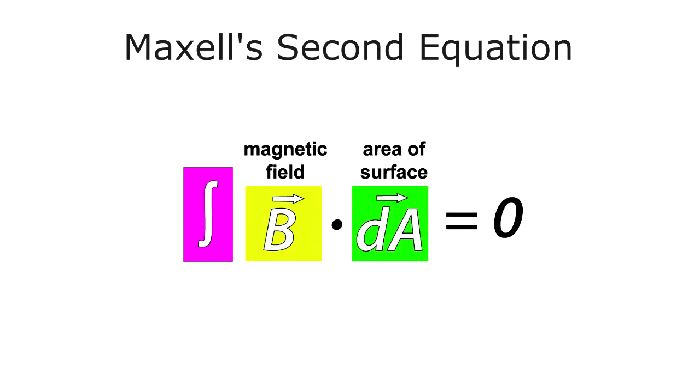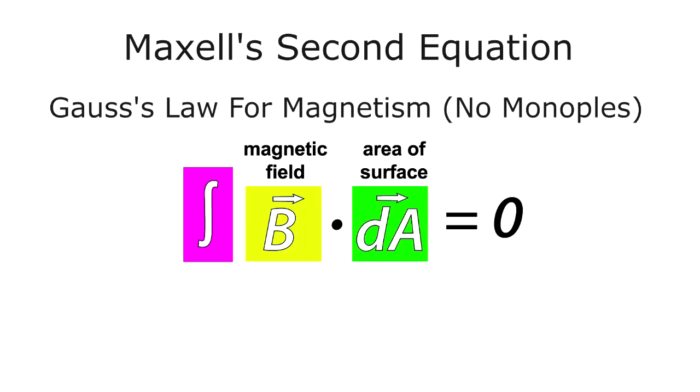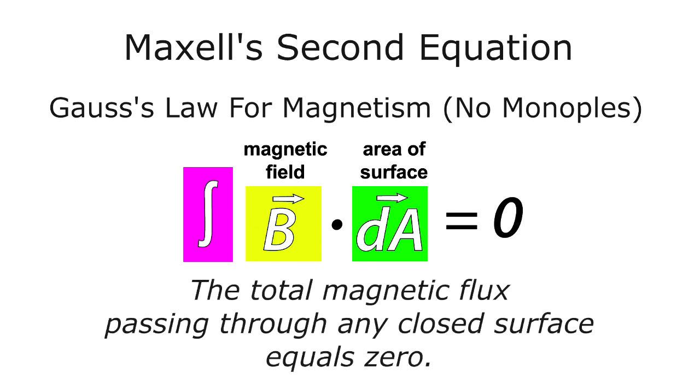Maxwell's second equation is also a form of Gauss's law, but in this case with magnetic flux instead of electric flux. Gauss's law for magnetism states this: The total magnetic flux passing through any closed surface equals zero.